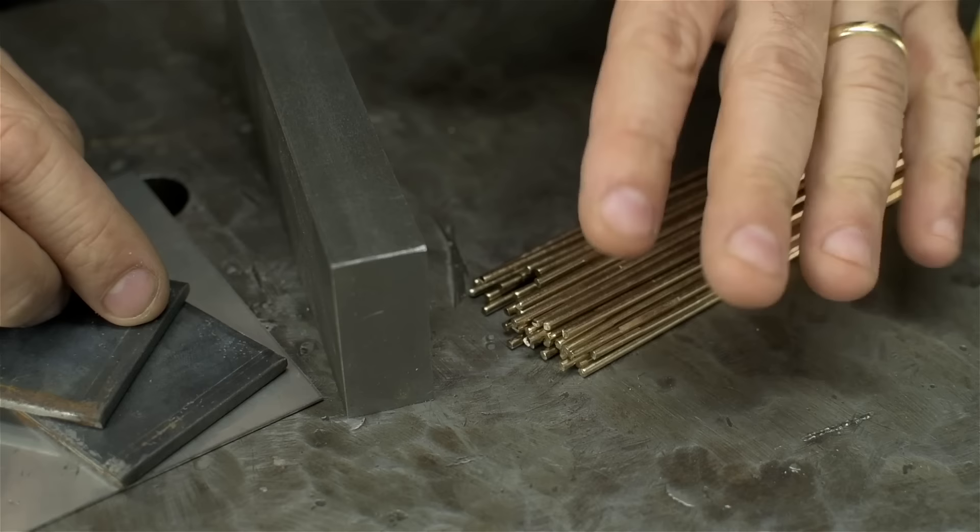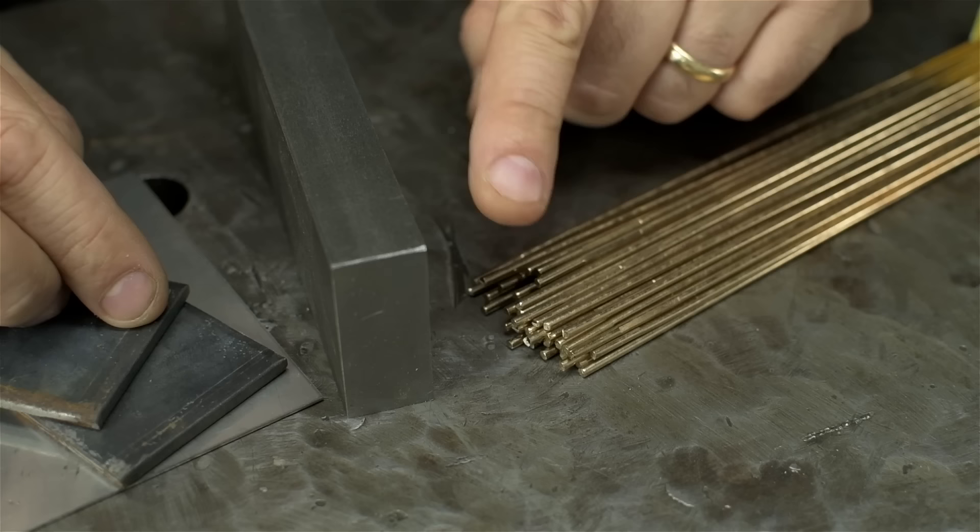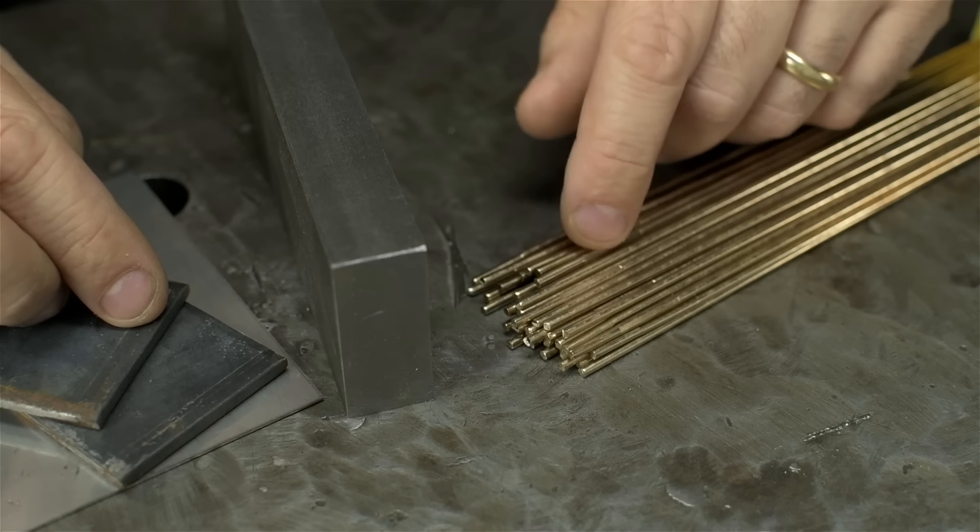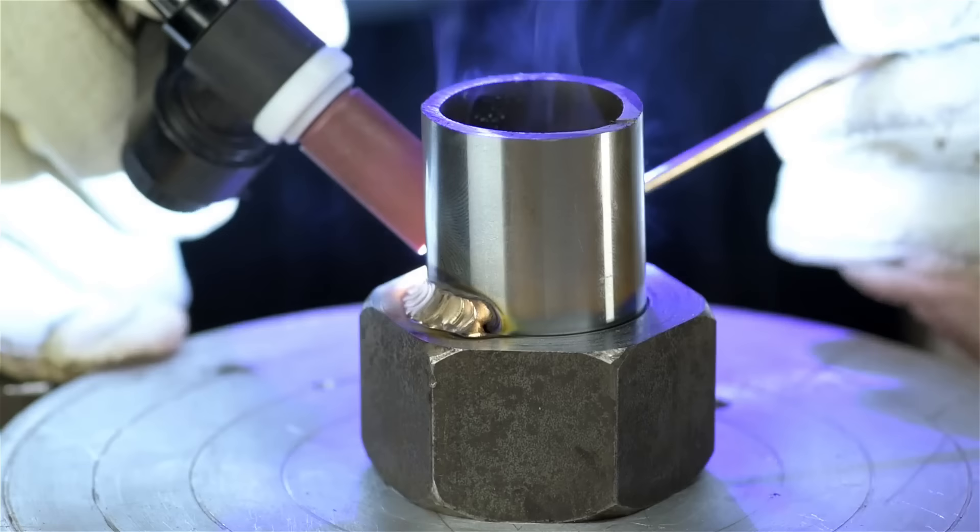SIB clocks in at around 50 or 60 KSI. Steel filler is probably going to start at 70 KSI and go up from there. Since the filler is of lower strength, you'd need a properly designed joint to account for that.